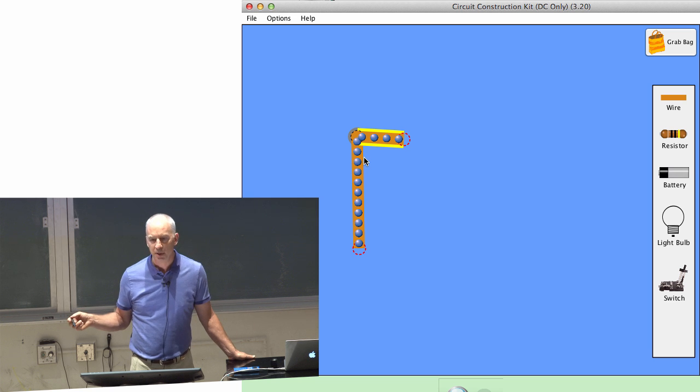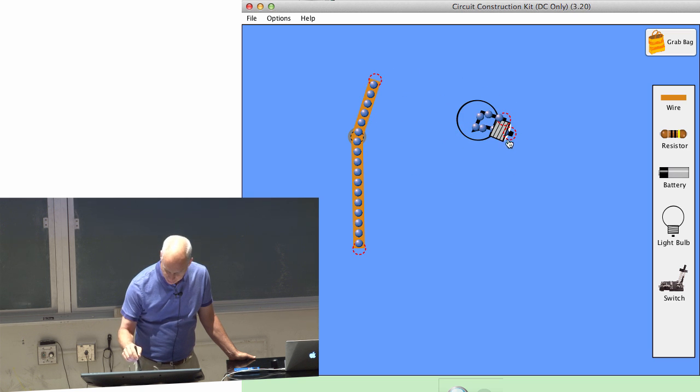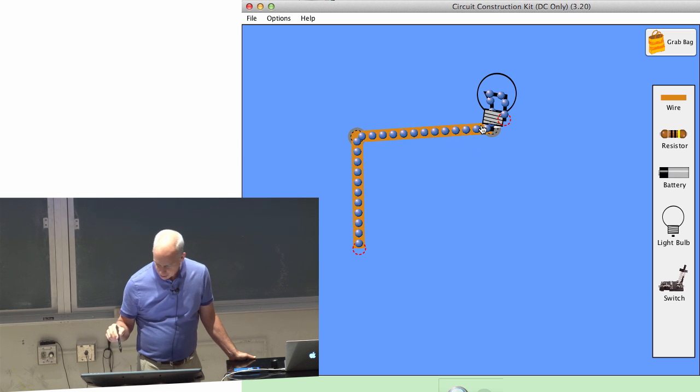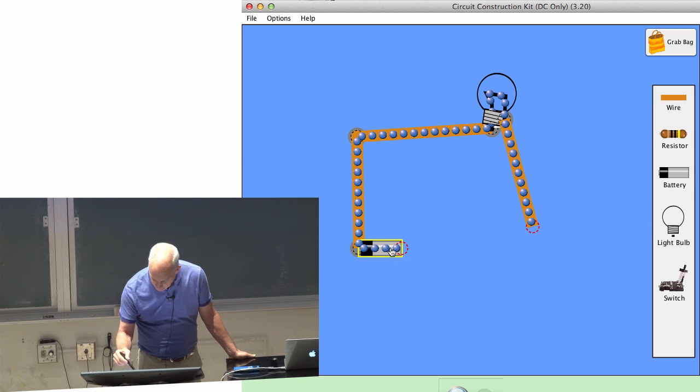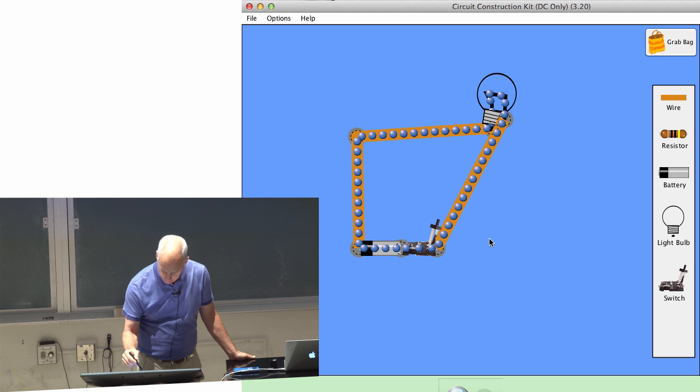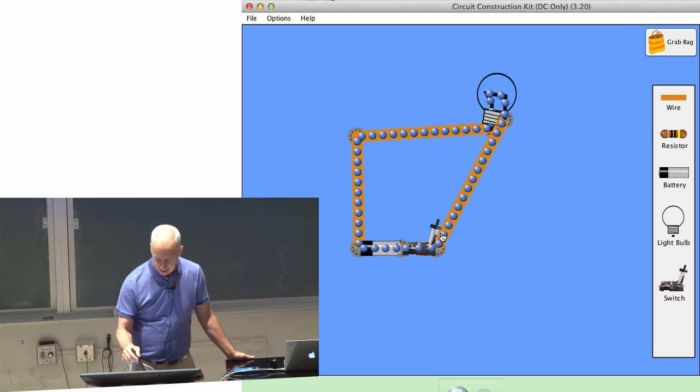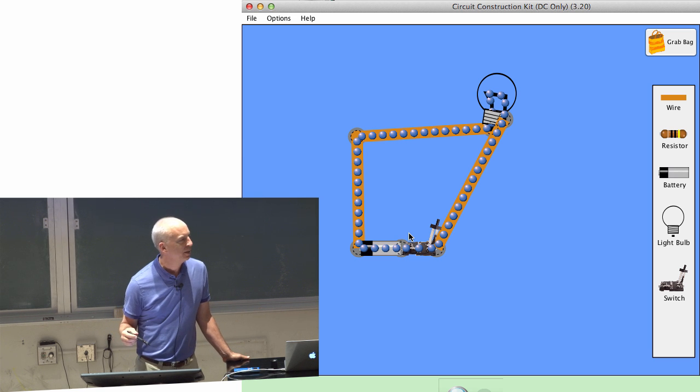In metals, electrons are the things that flow. I can put in a light bulb. That's a light bulb. I can put a battery in. Let me put in a switch. This switch connects the circuit. So this switch, when it's open, there's a gap there and electrons can't flow.